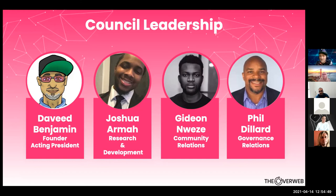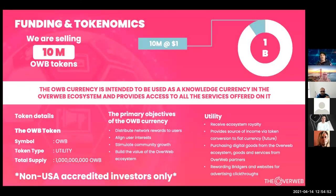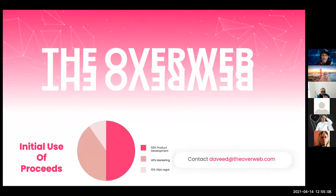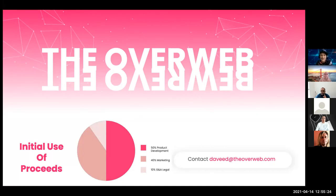We are selling 10 million of our overweb tokens to non-US accredited investors, and that private sale is starting later this month. If anyone is interested, here's my email. We're going to use the proceeds with 50% for product development and research and development, and 40% for marketing and G&A, legal, and patents — there's a ton of patents that need to happen here. Thank you — it's really great to be able to present this opportunity.